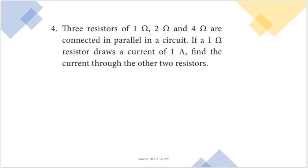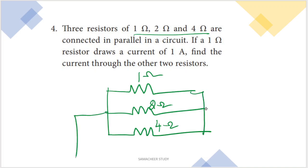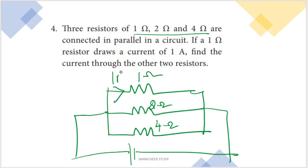Last question: three resistors of 1 ohm, 2 ohm, and 4 ohm are connected in parallel. If the 1 ohm resistor draws a current of 1 ampere, find the current through the other two resistances.